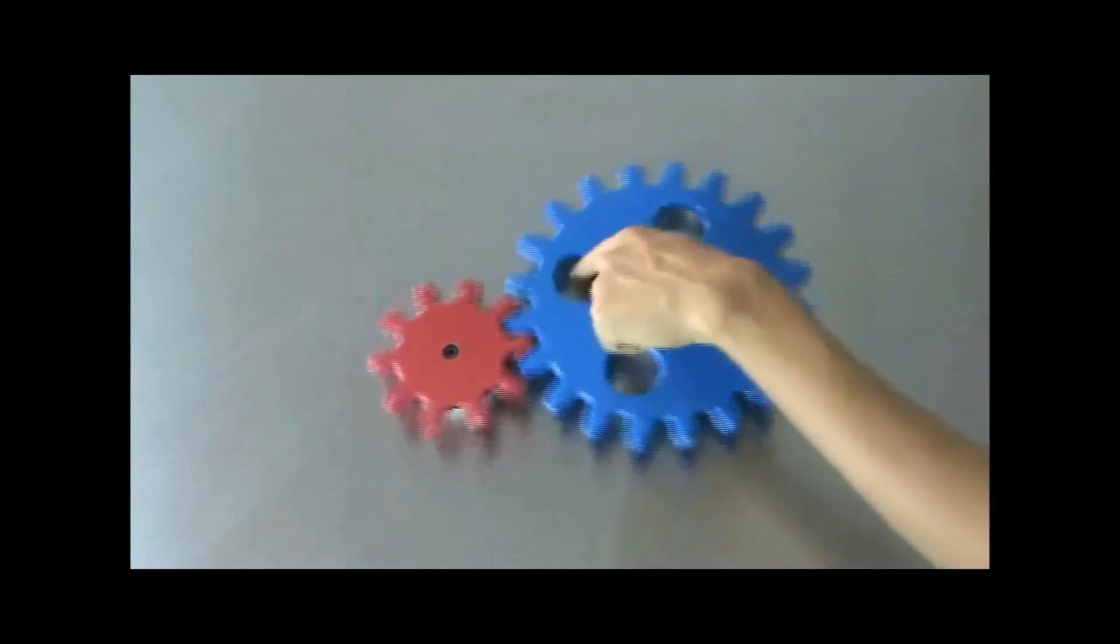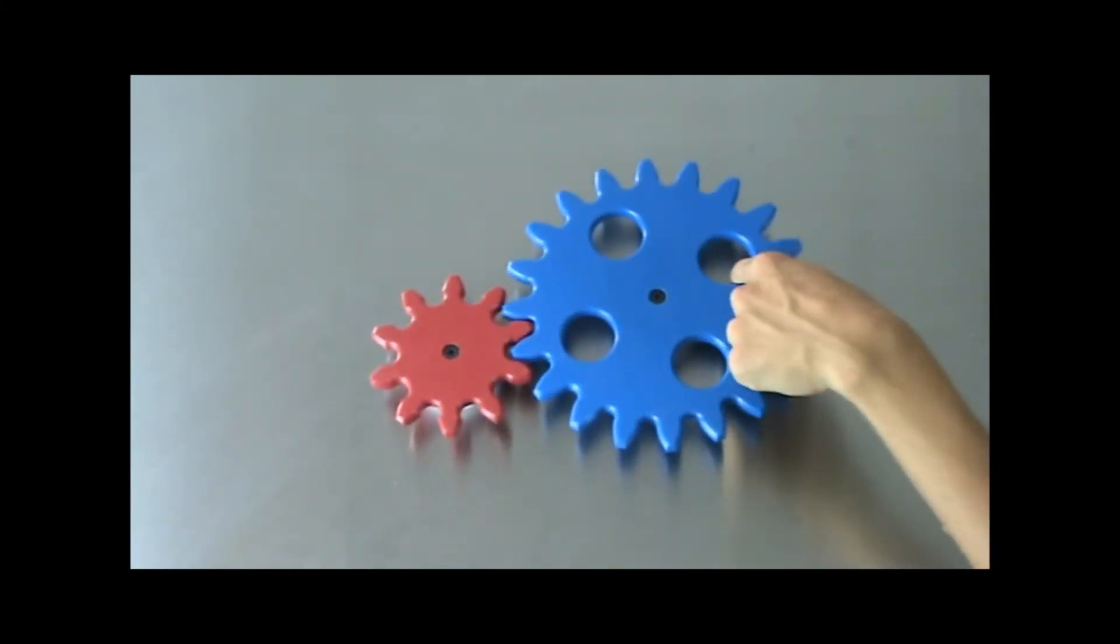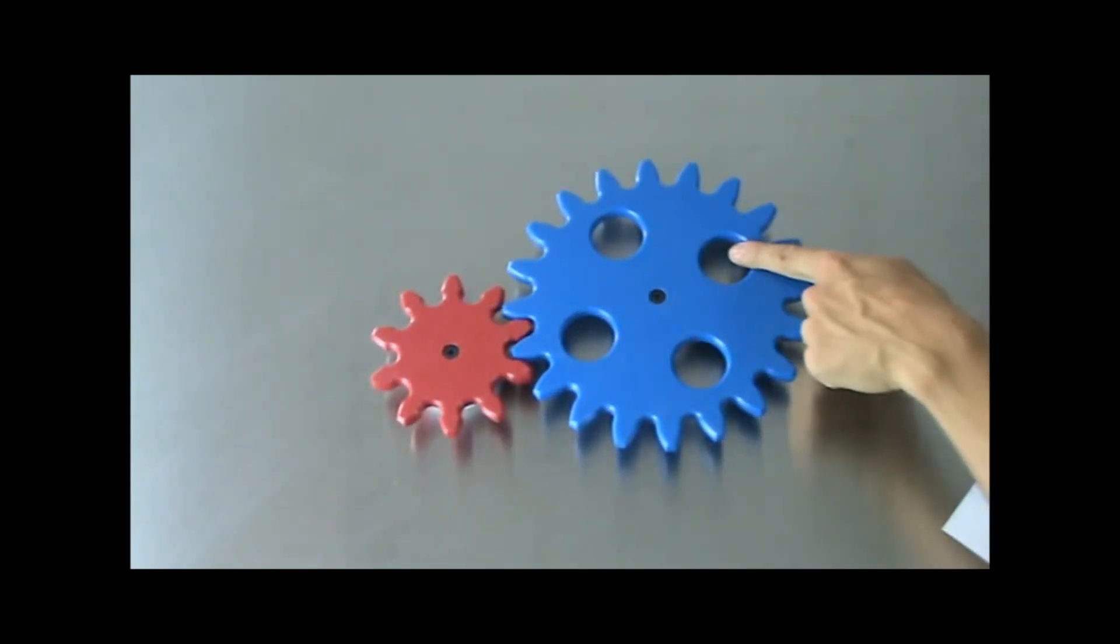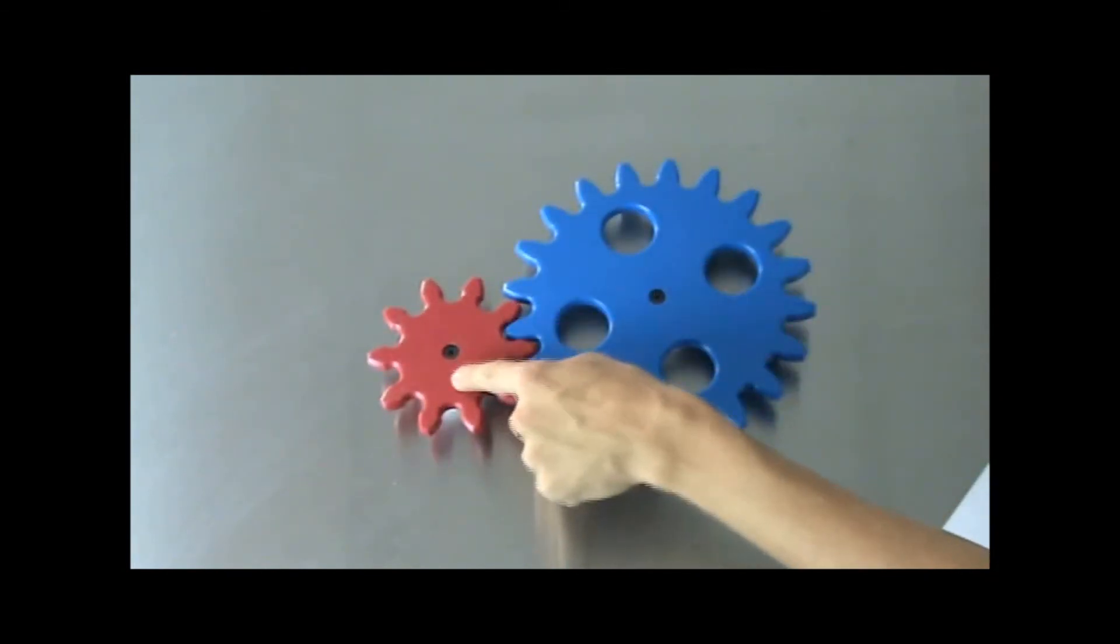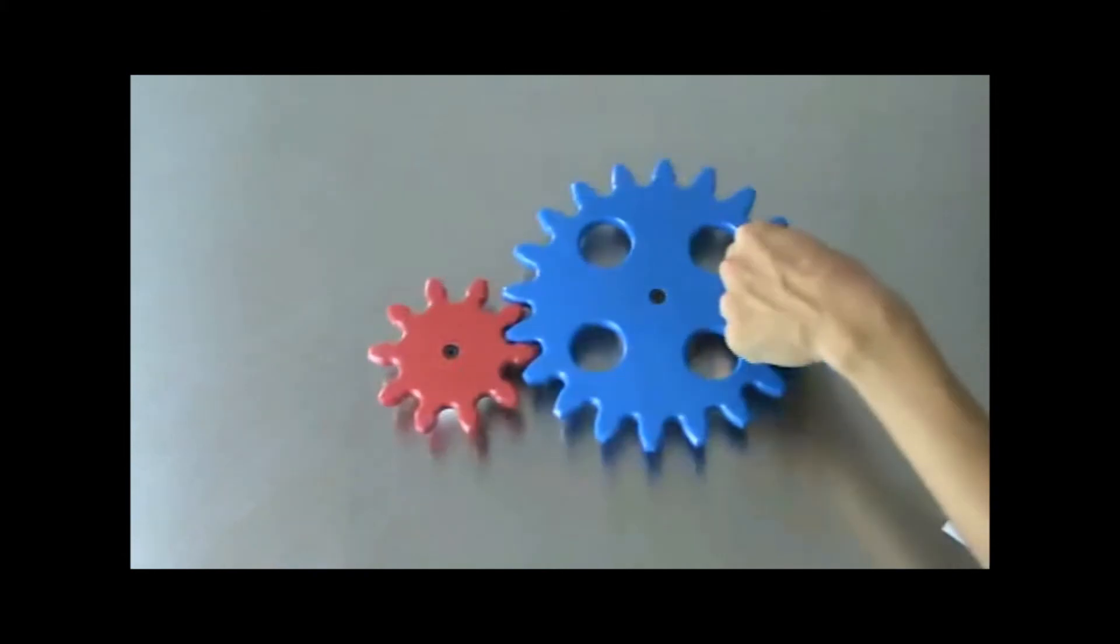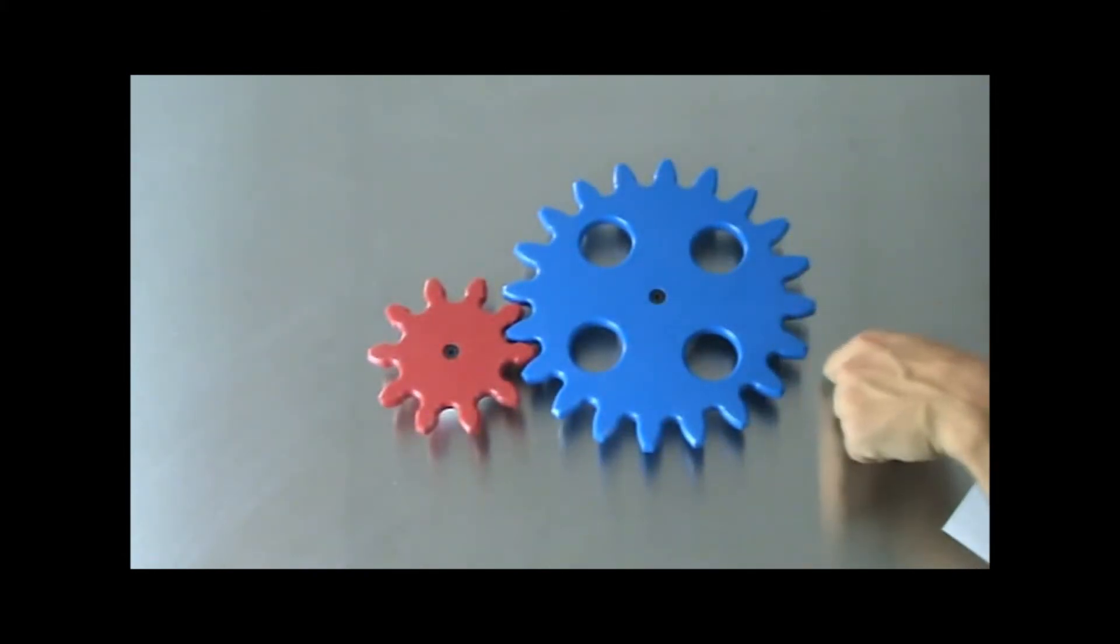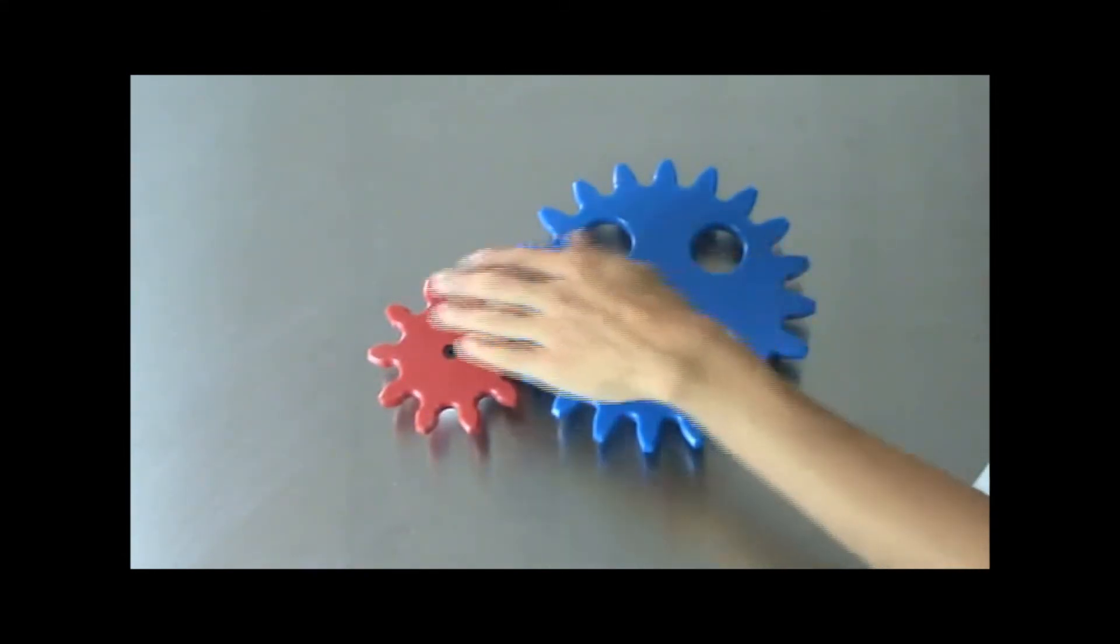In fact, if we were to count the number of rotations we would see we would notice that for every one turn of the blue gear we see two turns of the red gear. We call this a gear ratio. In this case the ratio is one to two.